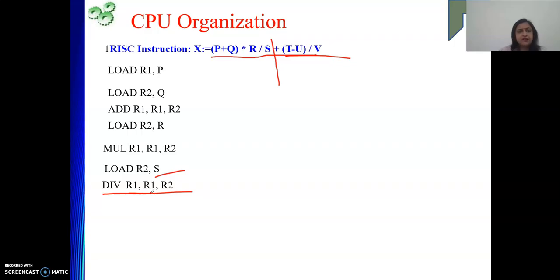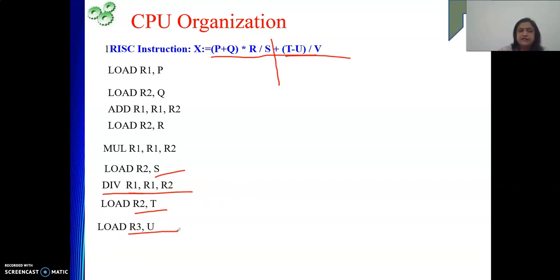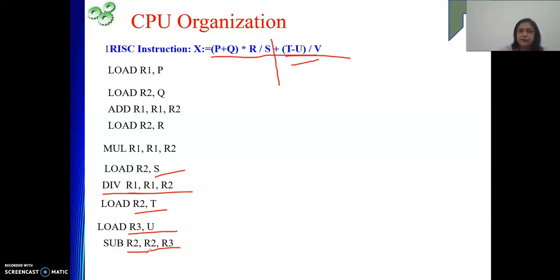Next we need T and U in registers to compute the subtraction. We cannot use R1 since it holds a partial result. So: LOAD R2, T and LOAD R3, U. Now both operands are in registers: SUB R2, R2, R3 — R2 minus R3 is performed and the result is stored in R2.